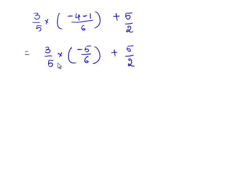Here, we cancel out 5 which is a common factor. We know 3 goes in 6 two times. Now, we are left over with minus 1 by 2 plus 5 by 2. Here, the two rational numbers have common denominator. Hence, we can directly add their numerators.